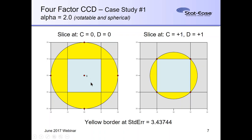If we move up to the top of the cube — a slice where C is at plus one and D is at plus one — and draw the same contour for 3.44, it goes through the corners of the cube. There's a dome that extends above the top of the cube out to the axial point above that slice. Basically, we could search the cube itself, or we could search the sphere that the cube is inscribed in — touching all the corners of the cube.